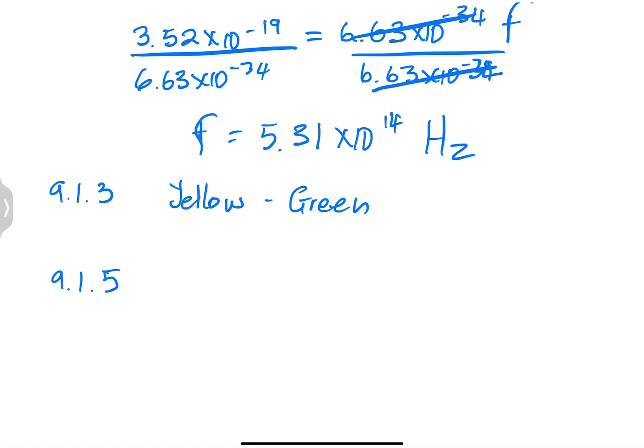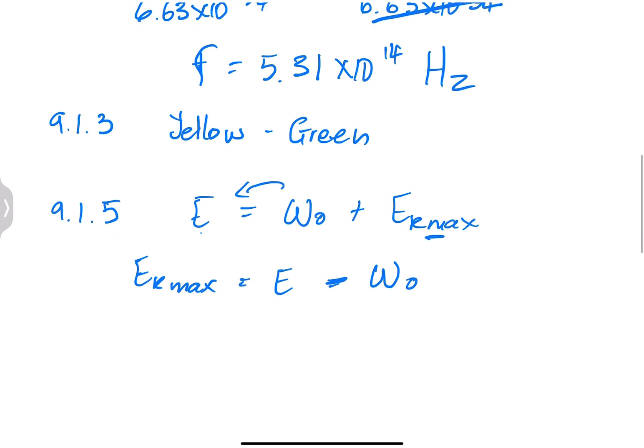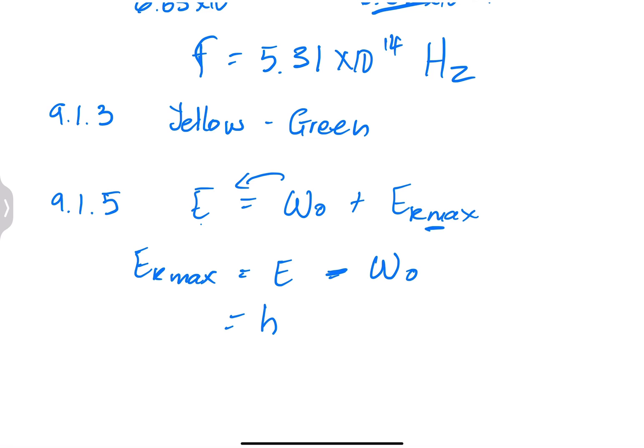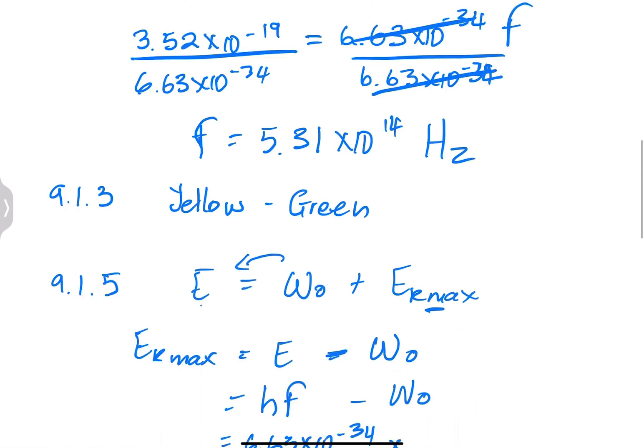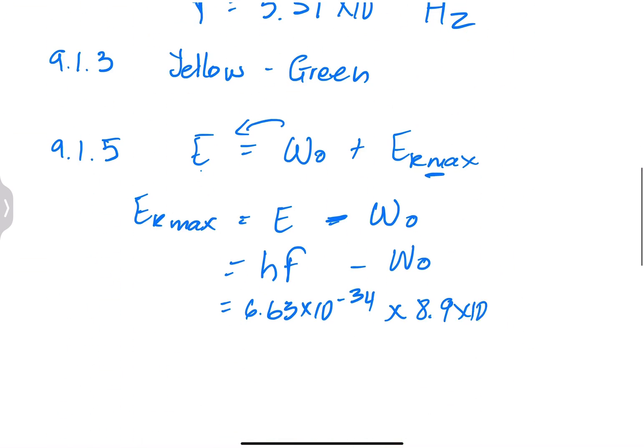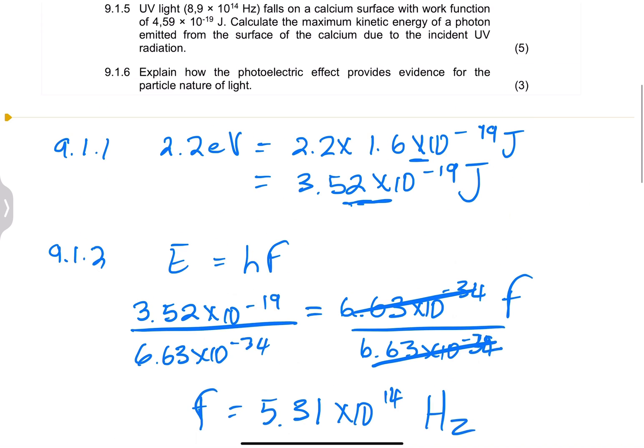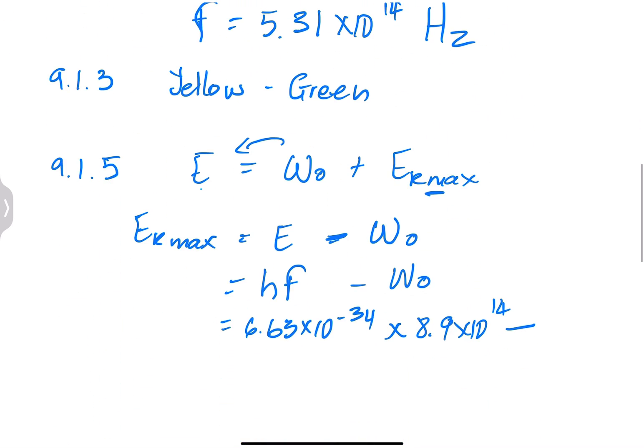We know that our formula says the energy of a photon is equal to the work function plus the maximum kinetic energy. But what are we looking for? We're looking for EK max. So this is going to be the energy minus the work function. We know that the energy of the irradiated photon will be Planck's constant multiplied by the frequency, minus the work function. That would be 6.63 times 10 minus 34 multiplied by 8.9 exponent 14 minus the work function 4.59 times 10 to the minus 19.